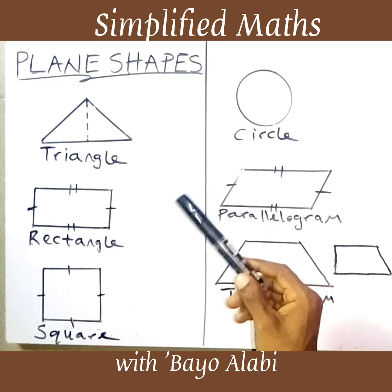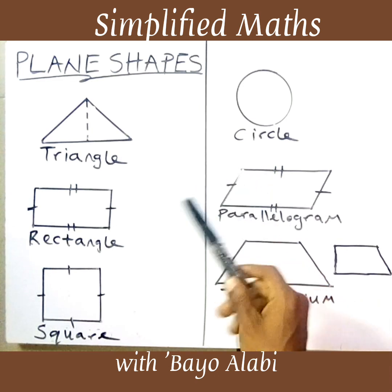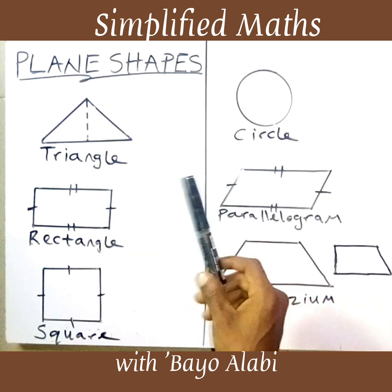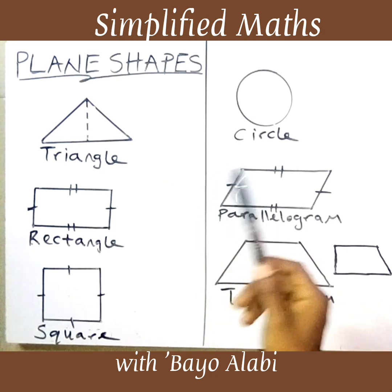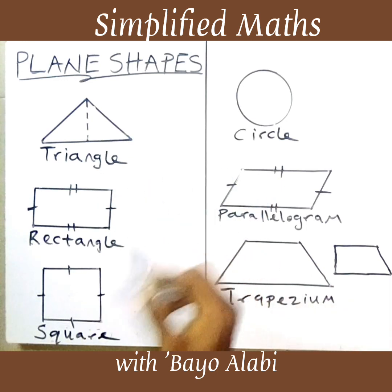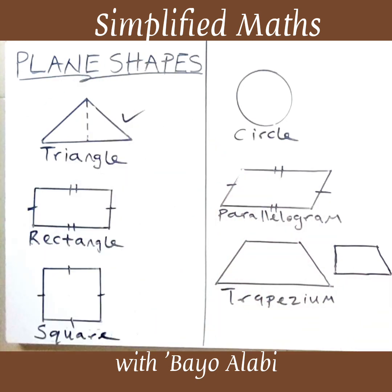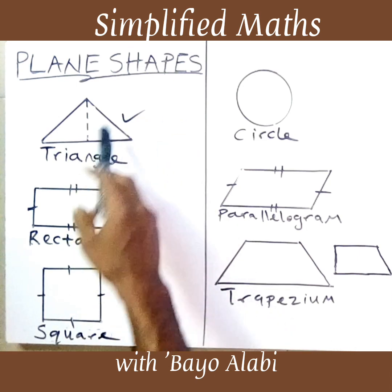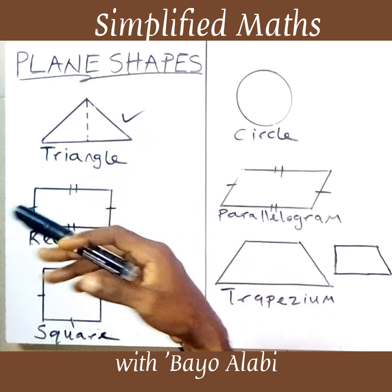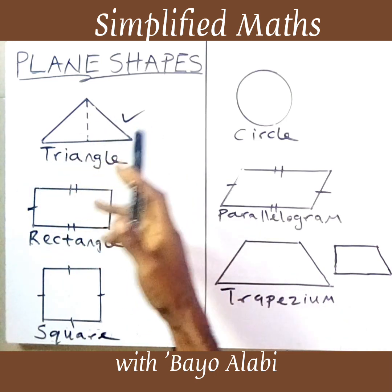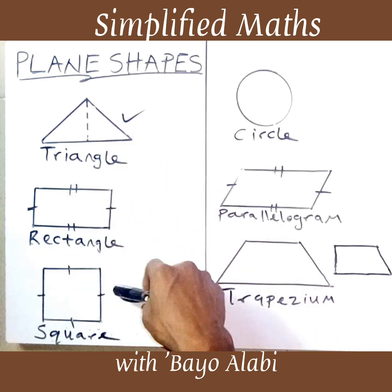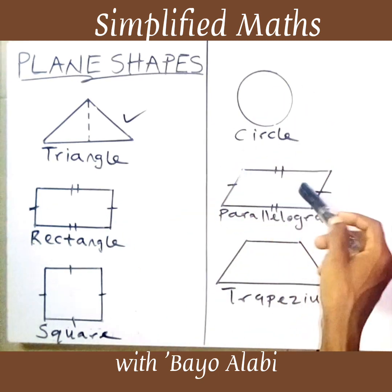In the next video I'm going to start with the perimeter and area of plane shapes, starting with the triangle. I will introduce the different types of triangles and how to calculate the perimeters and areas of different kinds of triangles, then move to rectangle, square, circle, parallelogram, and trapezium.